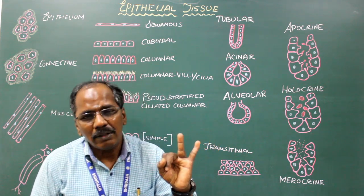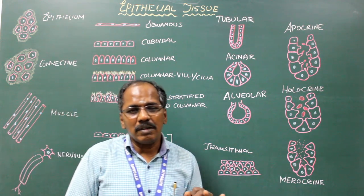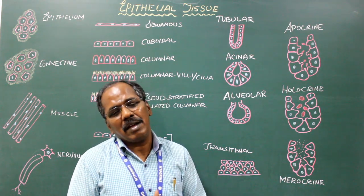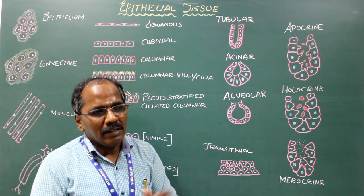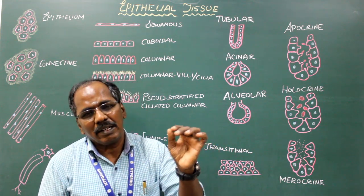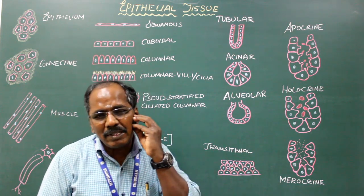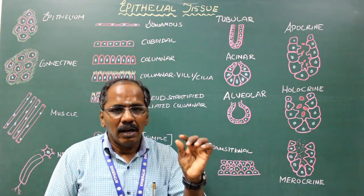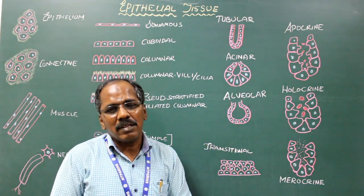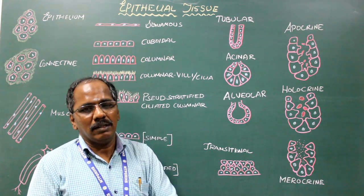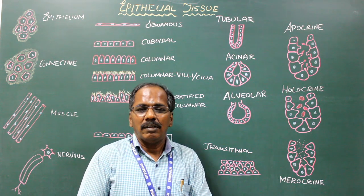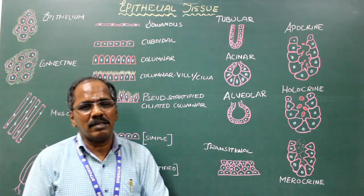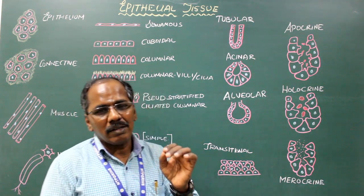Depending upon the nature of secretion, glands are divided into serous, mucus, and mixed types. Serous type secretions are thin or watery — example: parotid salivary gland. Mucus type secretions are thick or gel-like — example: sublingual salivary gland. Mixed type contains both serous and mucus secretions — example: submandibular salivary gland.